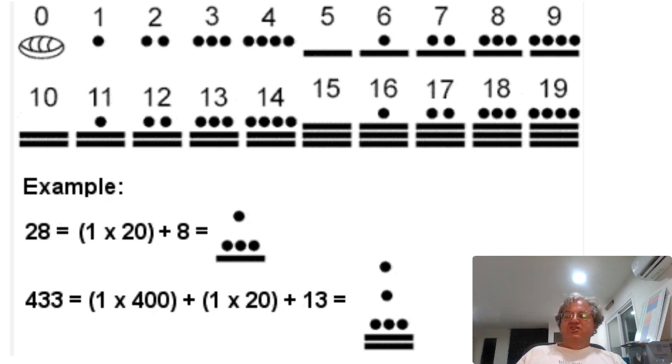And you can kind of see how it works. It actually works a lot like our decimal system. So 28, you would write 20 on the bottom, which was just a dot because 20 times 1. 1 is a dot. But I'm multiplying by 20. And then you add 8. Here's a symbol for 8 on the bottom. That's how we'd write 28. This is how you write 433. So you write 1 times 400 up here, 1 times 20 and 13. That gives you 433.